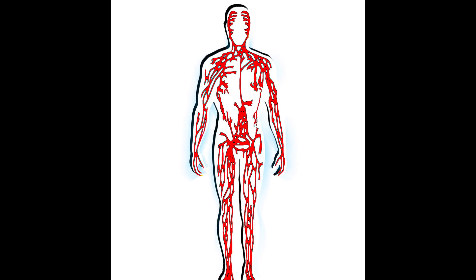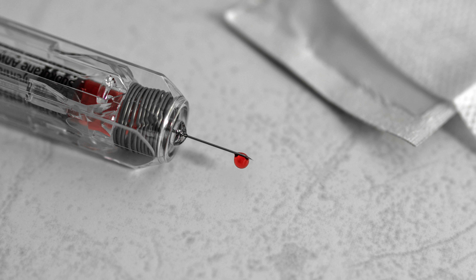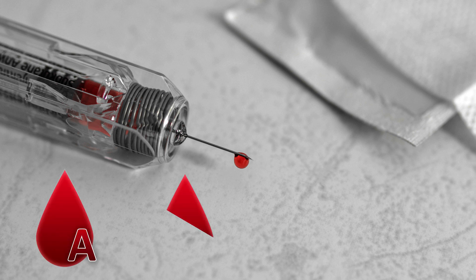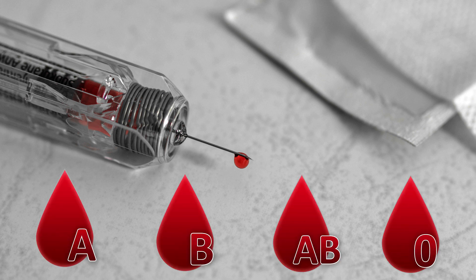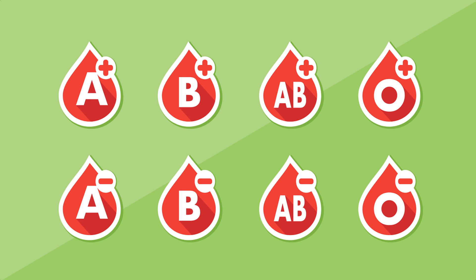The human body contains an average of five to six liters of blood. Blood is divided into four groups: A, B, AB, and O. They were described for the first time by Karl Landsteiner in 1901, who discovered that people with the same blood group can do a transfusion. The two most important systems of blood groups are ABO and Rhesus, which define our blood group.